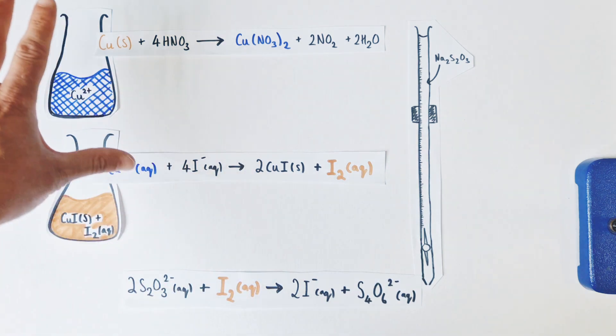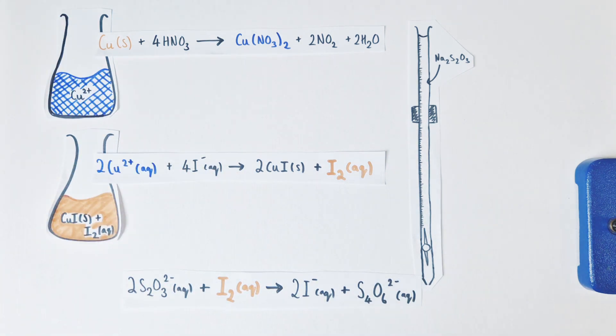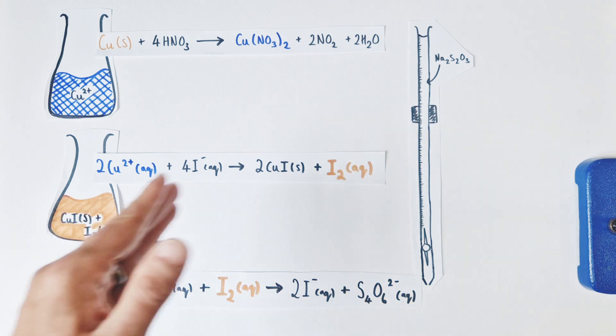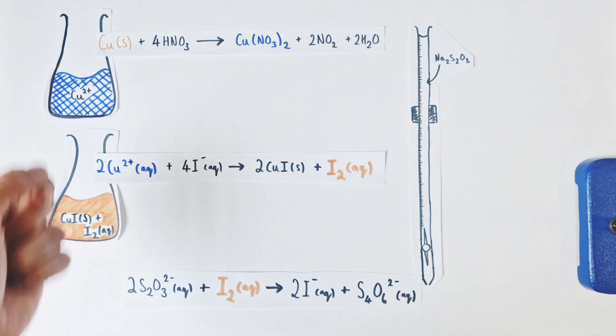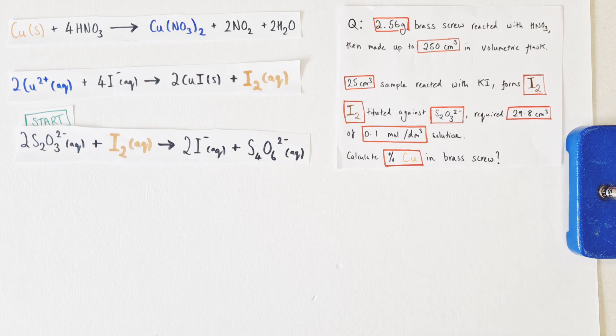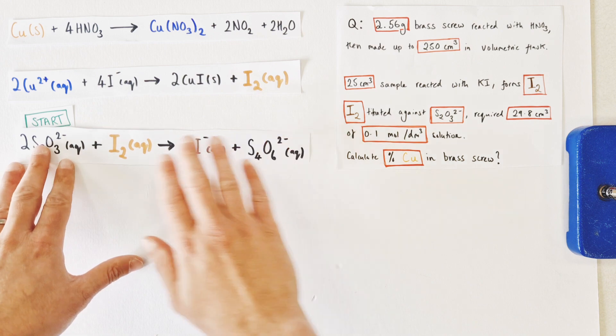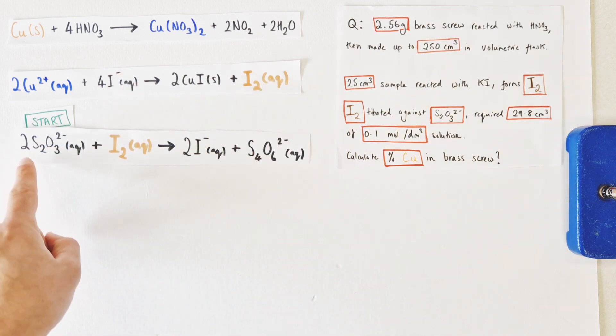So now we have our equations in place we're now going to go through the titration calculation itself to do that back titration to find our original amount of copper. We're now in the ideal position to do our titration calculation itself. What we're going to do is work back through the back titration in terms of the moles of the different chemicals involved while simultaneously solving the actual calculation itself.